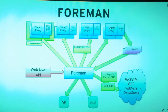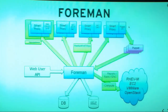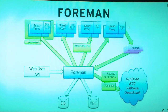This is the basic architecture for Foreman, where you have Foreman in the middle and different components surrounding it. On the very top you see smart proxies. Smart proxies are small modules or programs that help you consume services which are not easily accessible through APIs — such as DNS, DHCP, and TFTP. These services are provided to you by smart proxies.